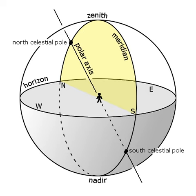The term meridian comes from the Latin meridies, which means both "midday" and "south," as the celestial equator appears to tilt southward from the northern hemisphere.